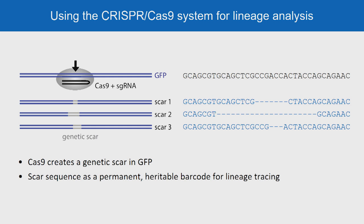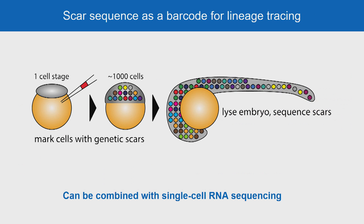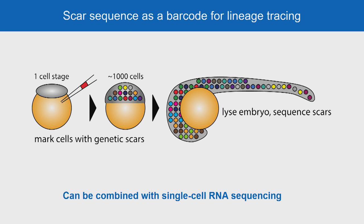These scars are somewhat variable in length and position, and we can use them as cellular barcodes for lineage tracing. This is shown here schematically on the left and in actual data on the right-hand side. We inject Cas9 into a one-cell stage embryo so that once the fish has about a thousand cells, each cell acquires a unique barcode that is then stably transmitted to the progeny and can be analyzed by single cell sequencing. In this example, the three yellow cells in the tail, we would identify as derived from a common ancestor.